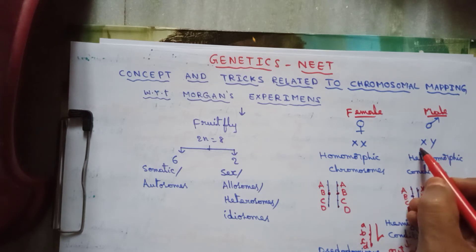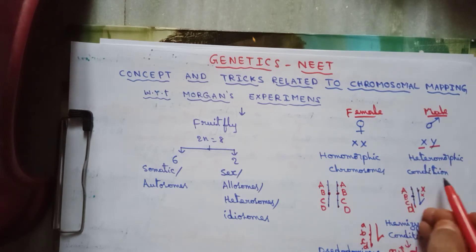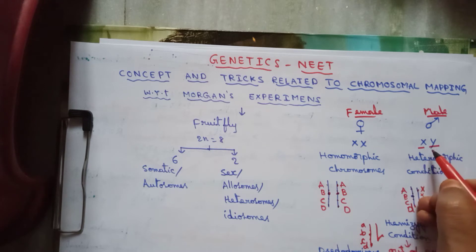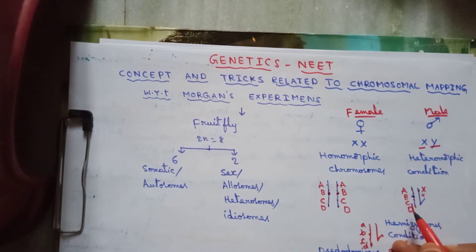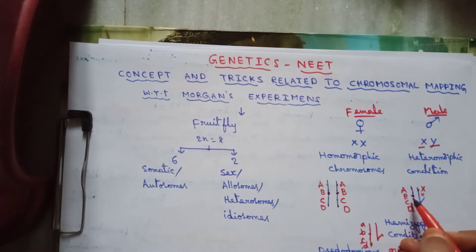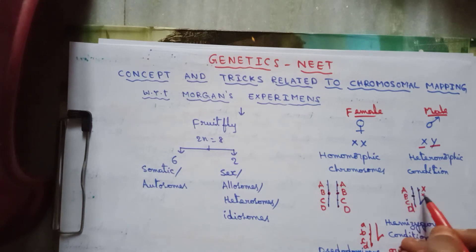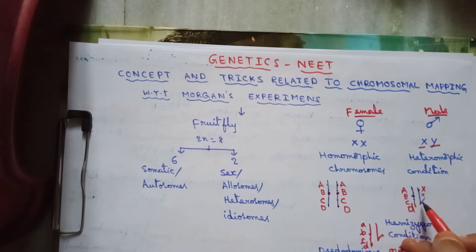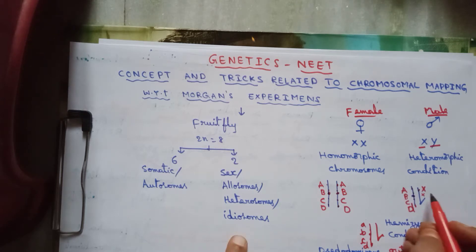In male fly, there are also two sex chromosomes - X and Y chromosomes - but these X and Y chromosomes are not homologous to each other. The type of alleles present on the X chromosome are not present on the Y chromosome, so this condition is called heteromorphic condition of sex chromosomes.